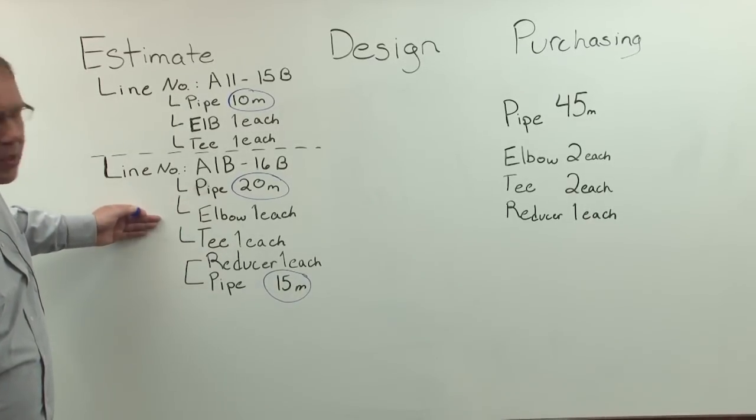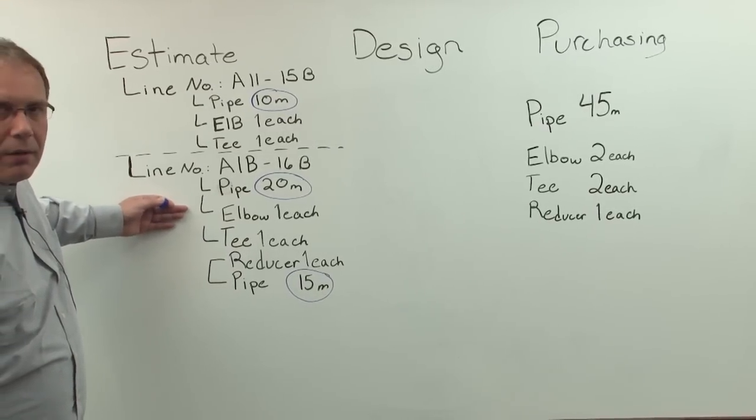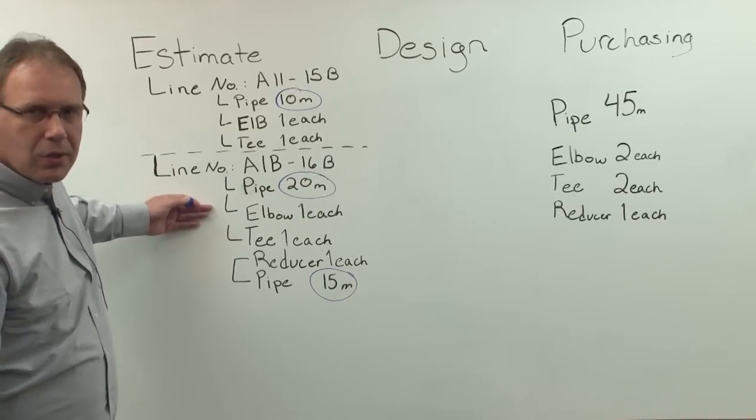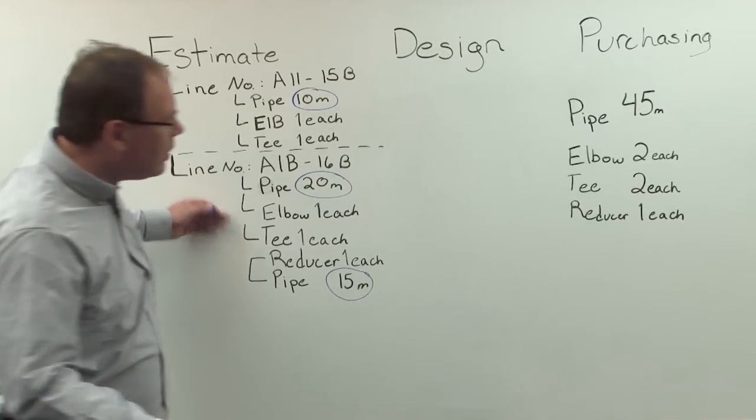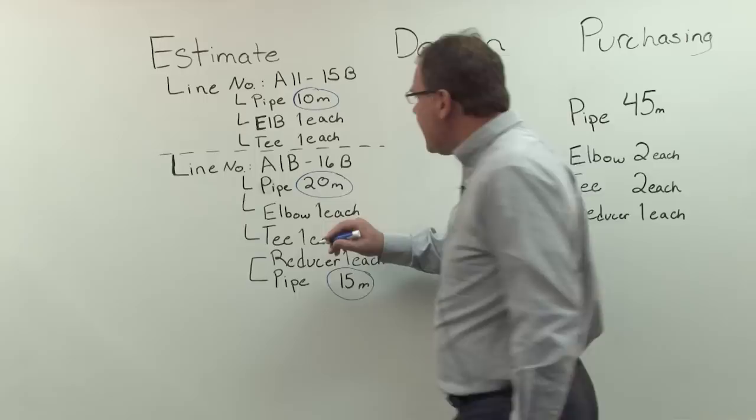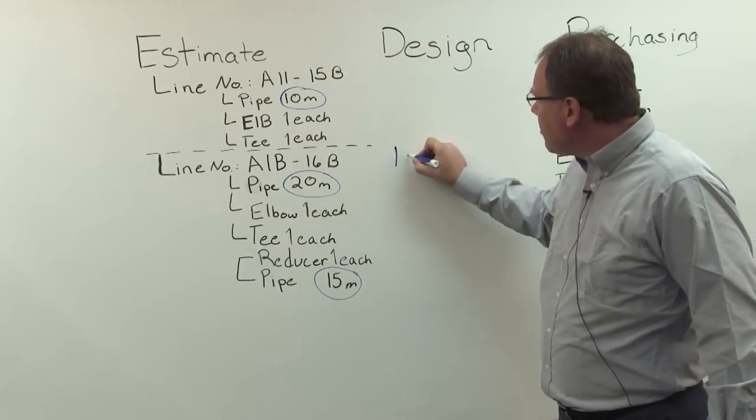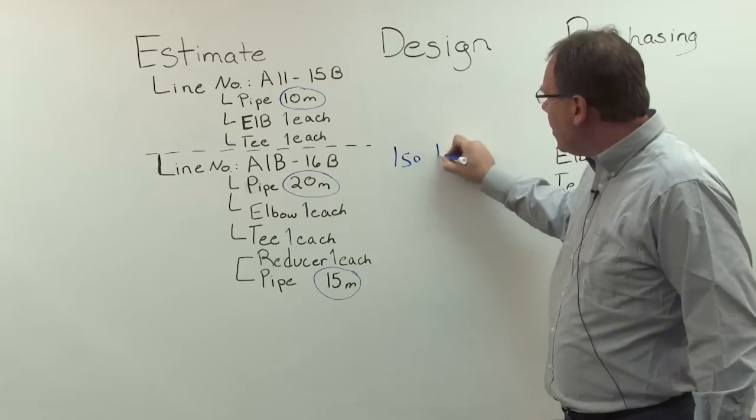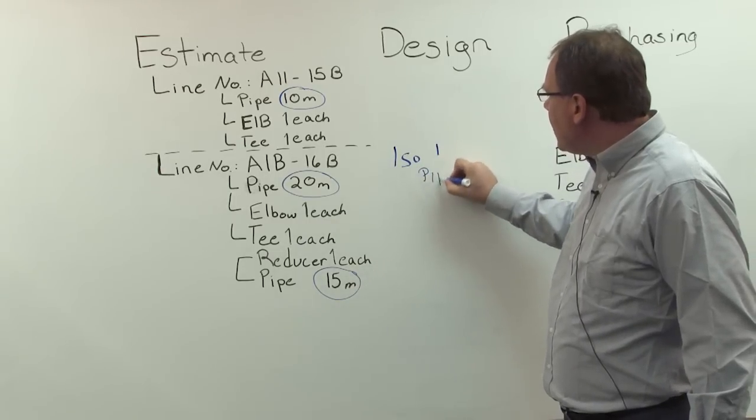So now let's say, take this example, this line number will be split in isometrics, doing the design, doing a 3D design. So let's split this. So first I have an isometric, isometric one. Isometric one, for example, will say...